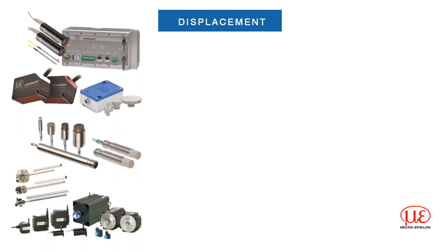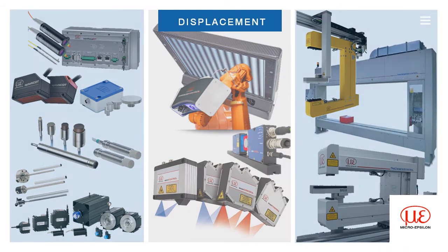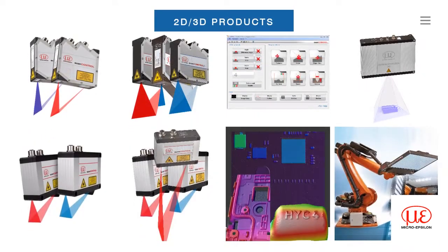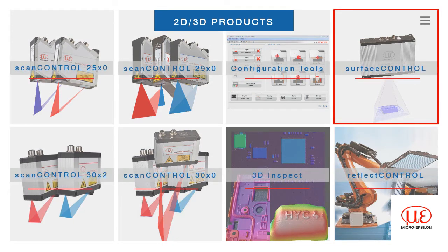Our displacement products can themselves be split into three categories depending on what our customers require. One-dimensional or 1D products are our main catalog products and comprise a number of different measurement technologies for measuring distance. The 2D/3D portfolio enables us to acquire both distance to a target as well as capturing or measuring profile features across the surface. Our third offering is that of turnkey systems where we supply the complete solution for measuring material thickness and profile in a customer's production line. Today's webinar is about our Surface Control 3D product, which is part of our 2D/3D product portfolio.